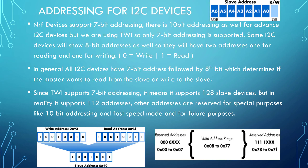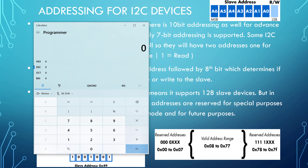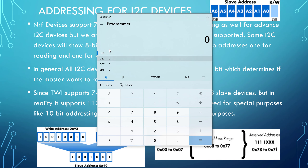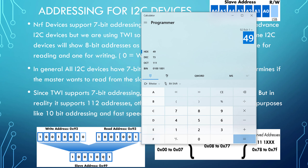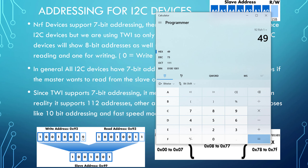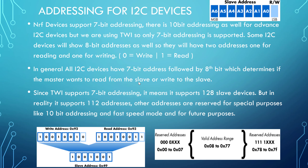If you see an 8-bit address in your slave device's datasheet, you'll have a different read address and write address. To calculate the 7-bit address from the 8-bit address, use a calculator: open hex mode, enter the 8-bit address — for example 0x92 — right-shift it by 1, and you get 0x49. That hex value is the 7-bit address. For read, the 8th bit is 1; for write, it is 0.